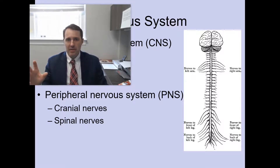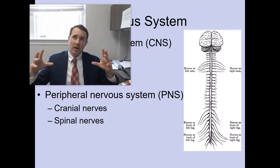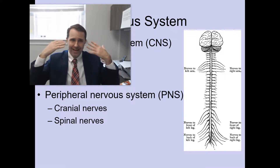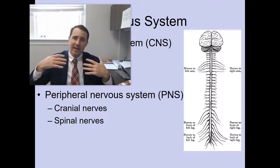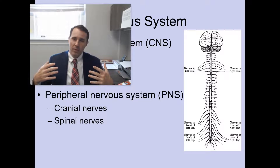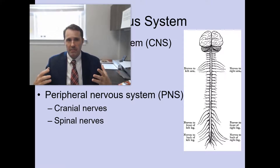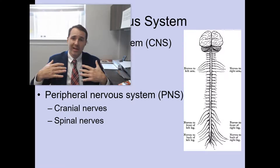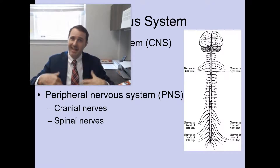We divide the peripheral nerves into the cranial nerves — that part of the peripheral nervous system associated with the head and neck — and the spinal nerves, which is the part of the peripheral nervous system associated with the rest of your body from the neck down.